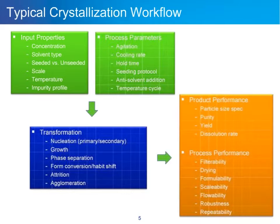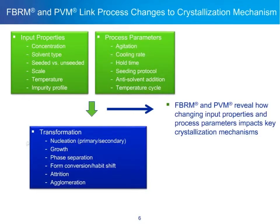After this transformation, you're trying to target specific product performance — particle size spec, purity, yield, dissolution rate — and process performance such as filterability, formulability, repeatability, robustness, and cycle times. The whole idea is to change your input properties and process parameters to get the correct transformation, the right balance of nucleation and growth, to target the crystals to achieve the best product and process performance. So where does FBRM fit in?